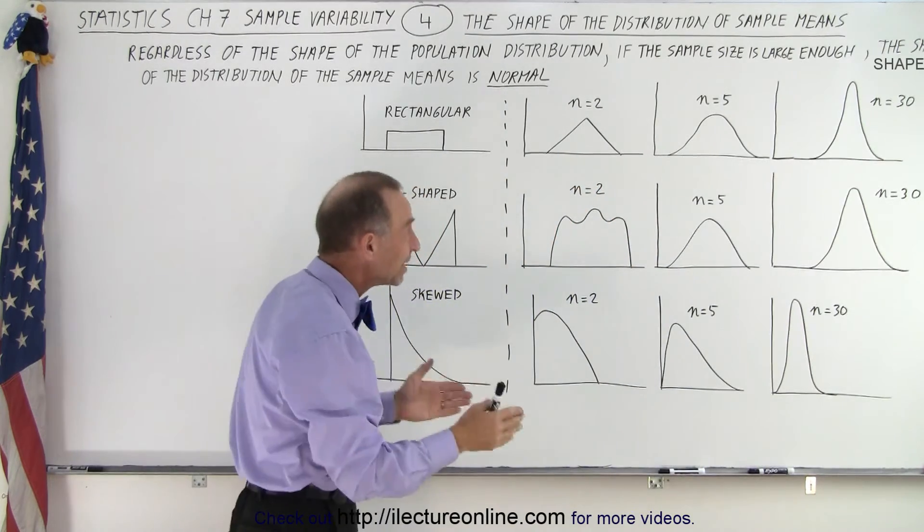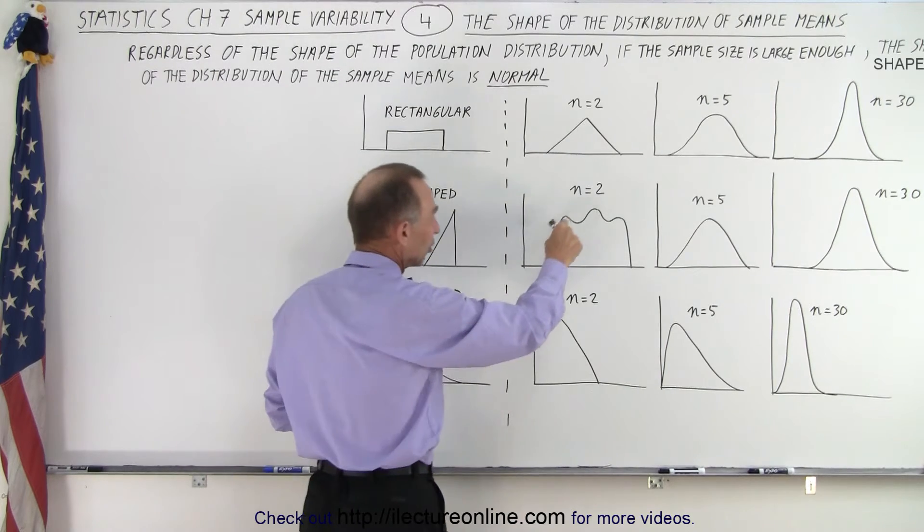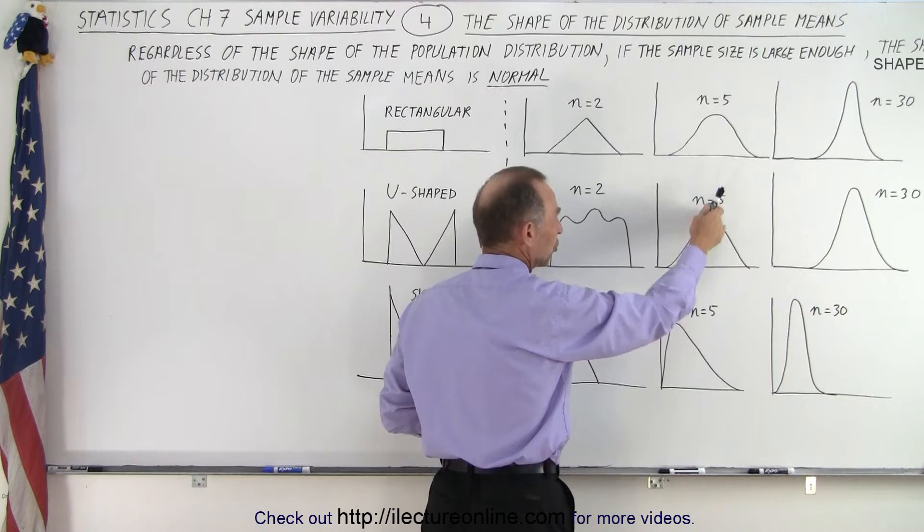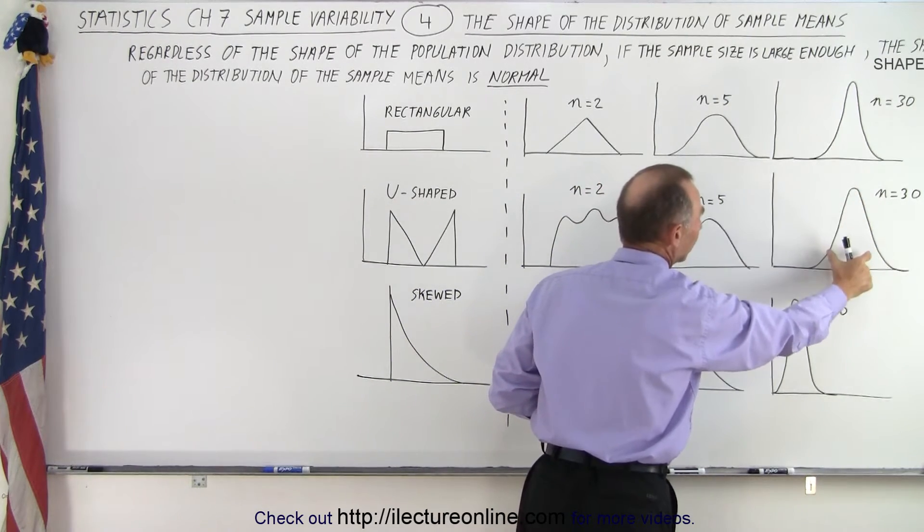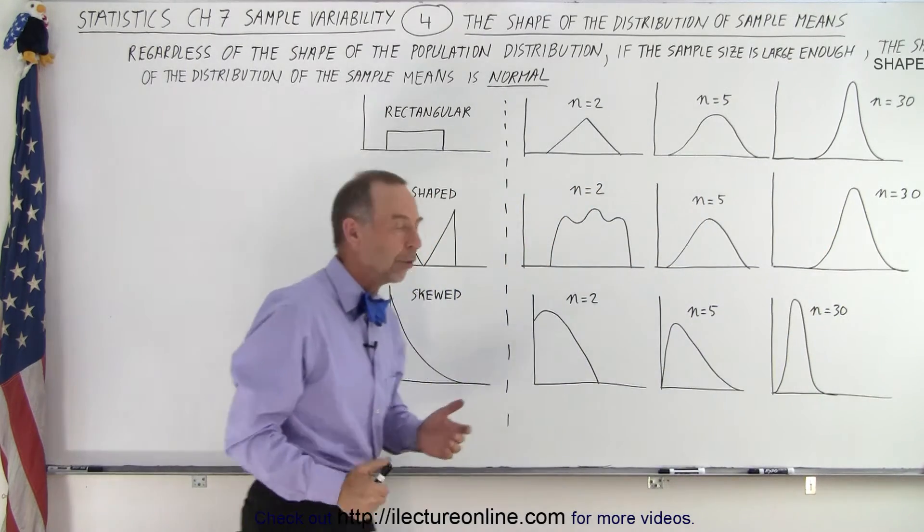Same when we have U-shaped initially, it doesn't at all look like a normal distribution. Now it looks more like a normal distribution when n equals 5. By the time n equals 30, again, you have a very nicely shaped, well-defined distribution that looks normal with a well-defined means or average.